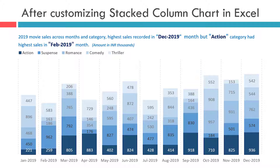However, after looking at this chart, one common question is asked: what is the total sales value for a given month? To get that answer, you would have to manually calculate or add individual category sales. In this video, we will see how we can include the total sales value inside this stacked column chart.